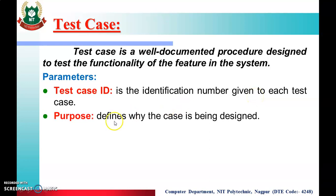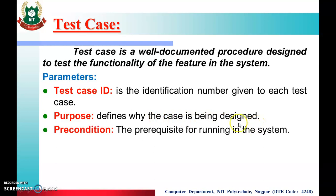The second parameter is Purpose — a short description defining what the test case is designed for. The third parameter is Pre-condition. For example, if we are testing a button in software, the pre-condition should be active. That means the prerequisite for running the system should be satisfied before we perform the test case.